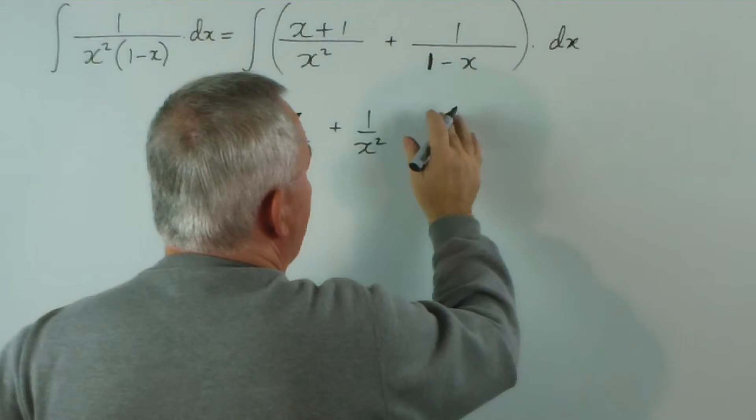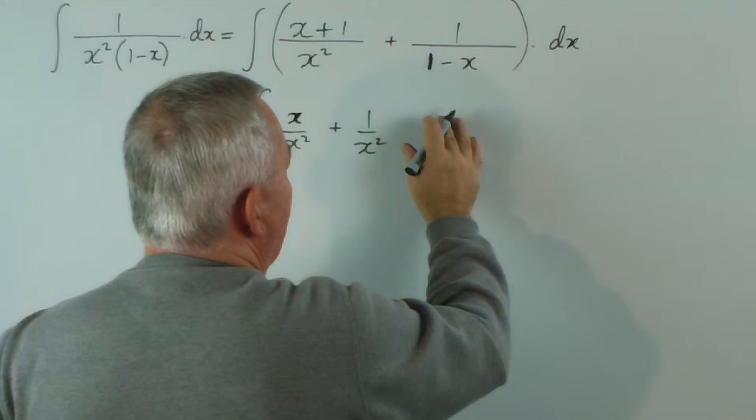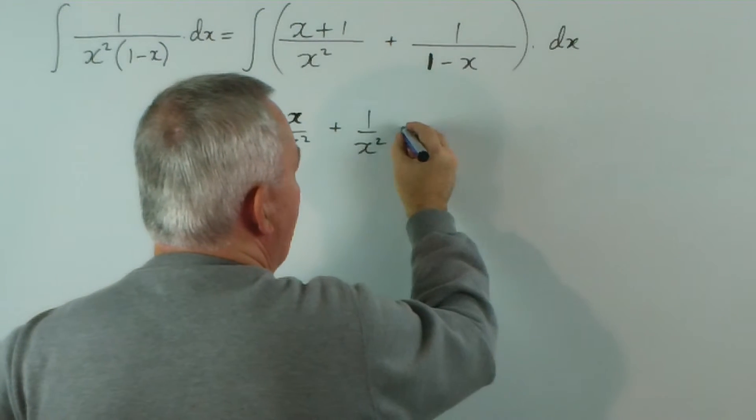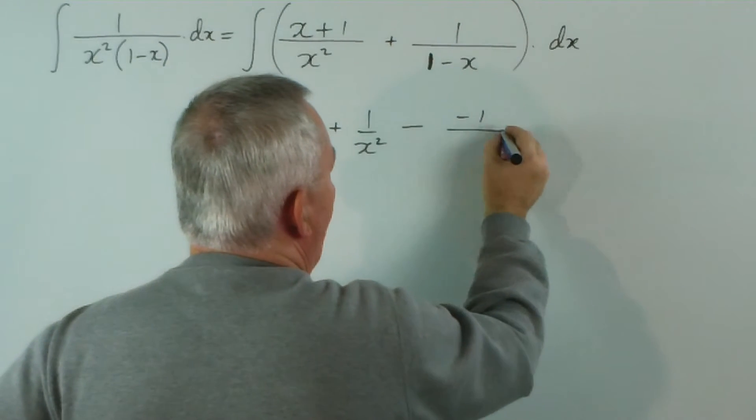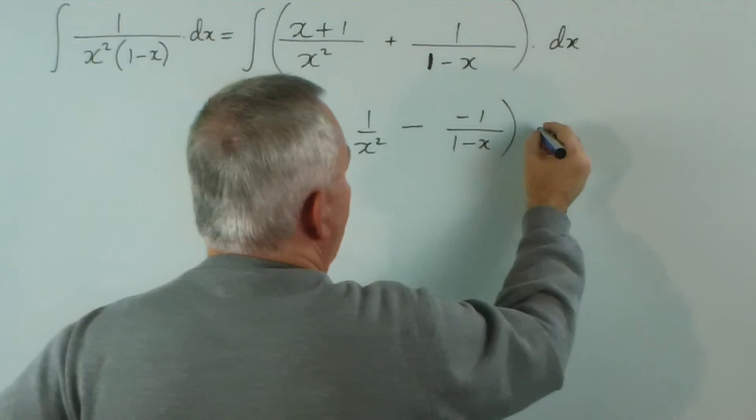And this one I'm going to change because I notice the derivative of this is negative 1. And I'd love to have a negative 1 there. So, I'm going to write minus negative 1 over 1 minus x, dx.